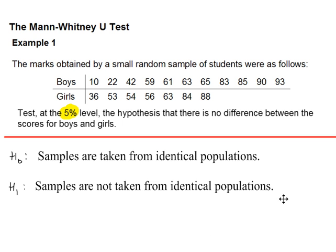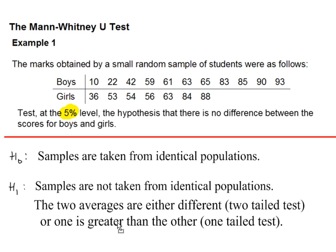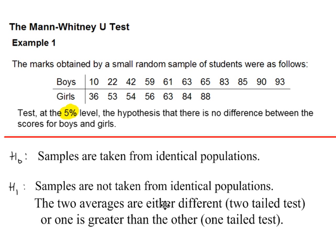This is not enough for H1. We also need to state whether the two averages are either different, which is a two-tail test, or one of the averages is greater than or less than the other, a one-tail test. So we need one of these statements here. Either the two averages are different, two-tail test, or one is greater than the other. Clearly from the question here, we're looking for, is there a difference between the boys and the girls? So this is a two-tail test.